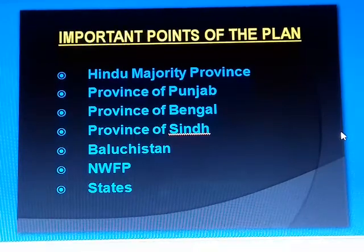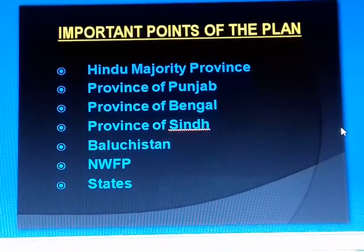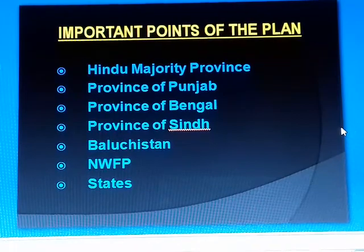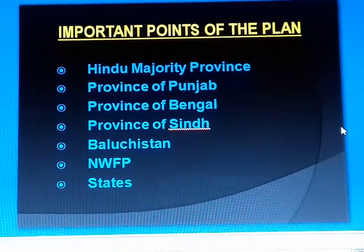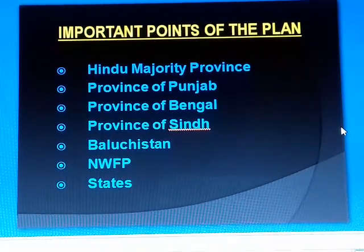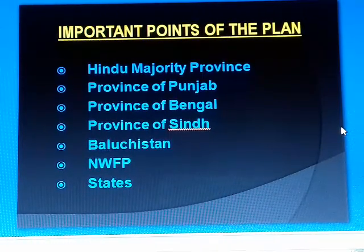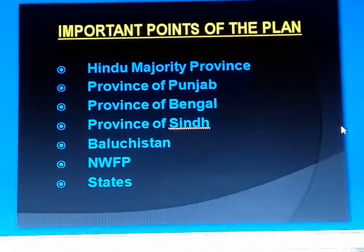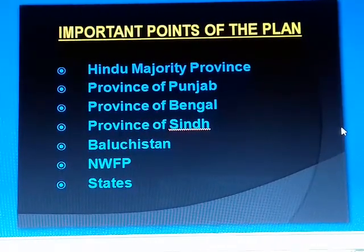Important points of the plan. The June 3, 1947 plan was an elaborate one. It covered the whole of the subcontinent. The government took the final decision to divide it into two independent states.